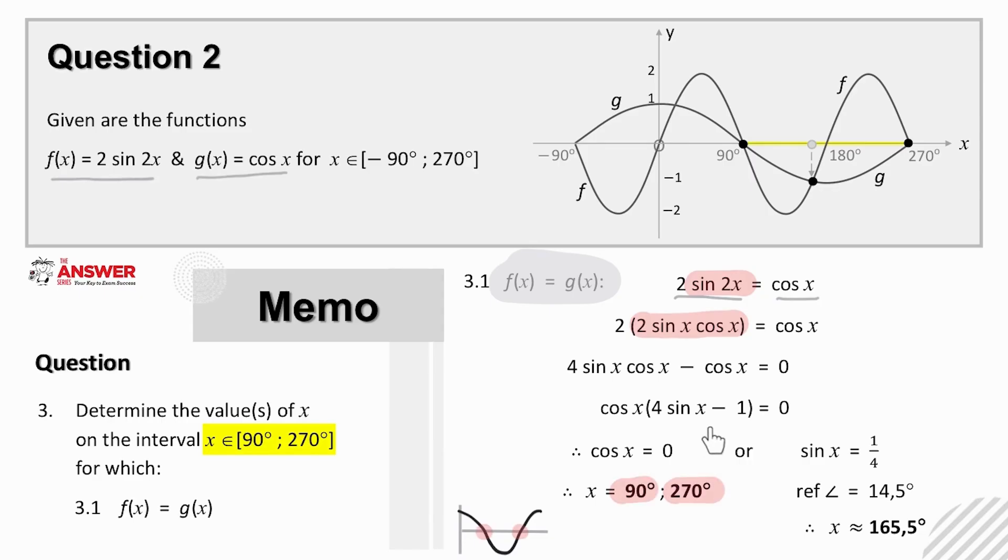And then for this bracket to be zero, sine of x must be 1 quarter. And if you remember, this can be classified as a type 1 trig equation, a ratio equaling a value, which means find the reference angle, and then solve for x considering where sine is positive. Here we get a first and second quad solution, 14.5 degrees and 165.5 degrees. But if we check up at where the two graphs intersect within the required interval, we only need to give this one solution.